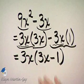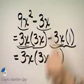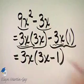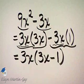Now there's a couple of ways to check. We can check by multiplying: 3x times 3x is 9x², 3x times 1 is 3x, and of course there's the subtraction. That's one check.